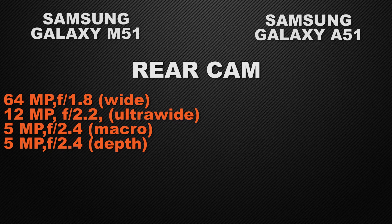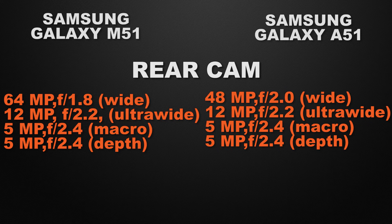Let's start the comparison with the camera, beginning with the rear cameras. The M51 has a quad camera setup: 64 megapixel wide camera, 12 megapixel ultra-wide camera, 5 megapixel macro camera, and 5 megapixel depth sensor. The A51 also has a quad camera setup: 48 megapixel wide camera, 12 megapixel ultra-wide camera, 5 megapixel macro camera, and 5 megapixel depth sensor. So M51 is the winner here.